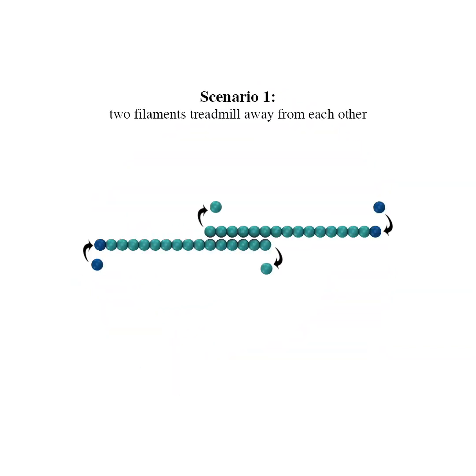In scenario 1, if two filaments treadmill away from one another, lateral contact is reduced, allowing further filament sliding and ring constriction. The effect of this scenario is similar to that of depolymerization.